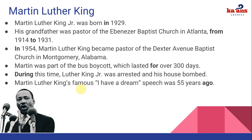I chose Martin Luther King and history because we're going to be using the vocabulary words we just talked about. These are some facts about Martin Luther King. Number one: Martin Luther King Jr. was born in 1929. Number two: his grandfather was pastor of the Ebenezer Baptist Church in Atlanta from 1914 to 1931 — again using the vocabulary 'from...to.'